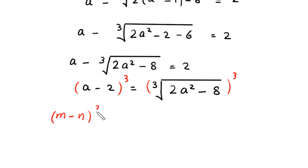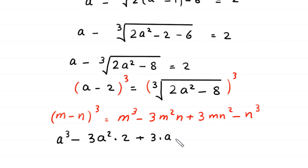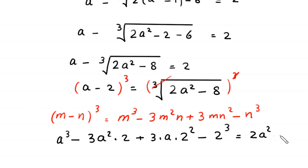From here we take the cube of both sides. Using the algebraic identity (m minus n) cubed equals m cubed minus 3m squared n plus 3mn squared minus n cubed, the left side (a minus 2) cubed expands accordingly. On the right hand side, the cube cancels with the cube root, leaving 2a squared minus 8.